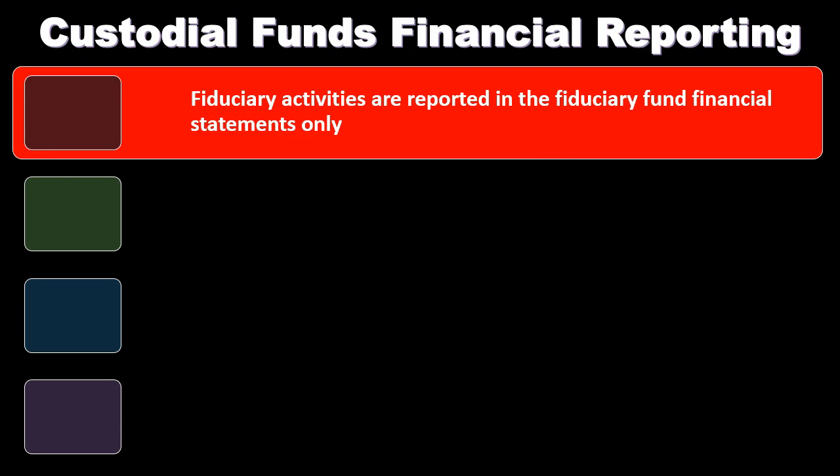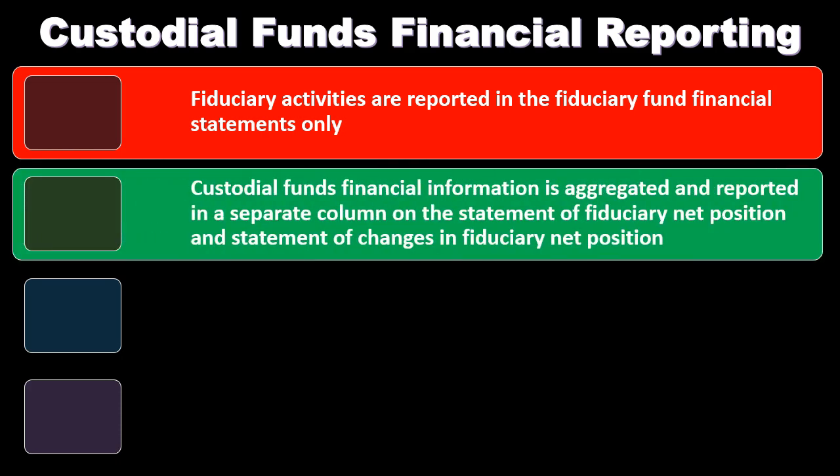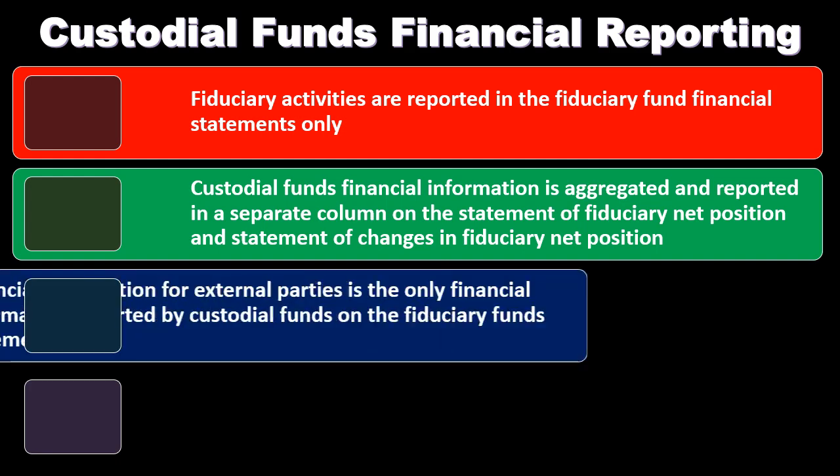Regarding custodial funds financial reporting, fiduciary activities are reported in the fiduciary fund financial statements only — at the fund level — and not at the government-wide level. This is because the assets involved belong to the fiduciary funds and not to the governmental unit administrating them. Custodial fund financial information is aggregated and reported in a separate column on the statement of fiduciary net position and the statement of changes in fiduciary net position.